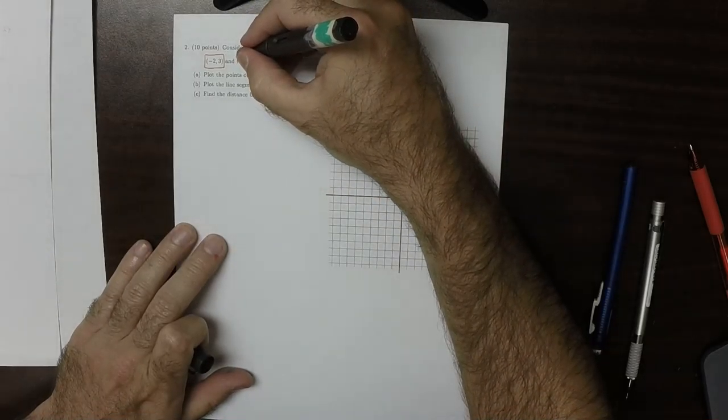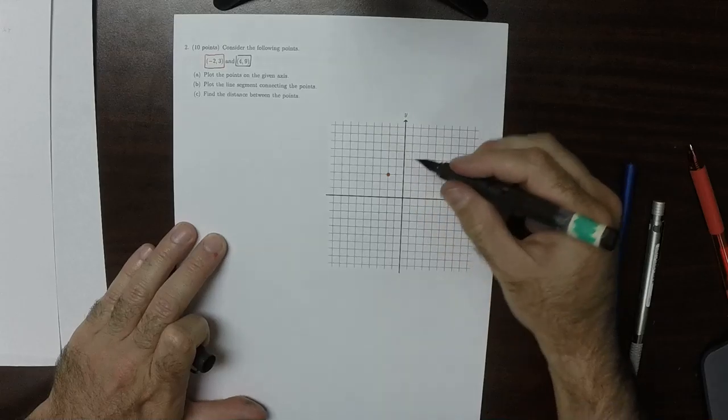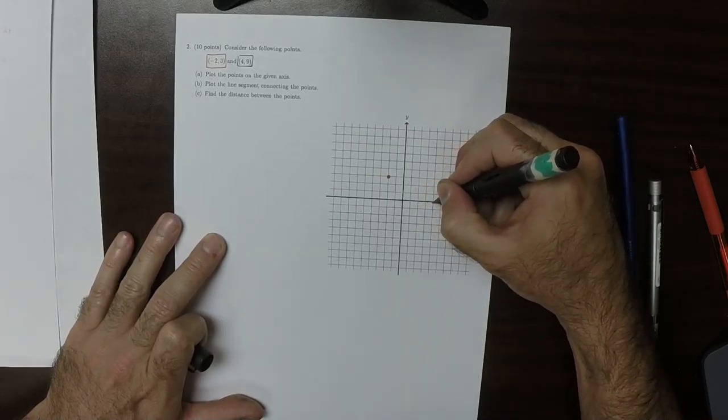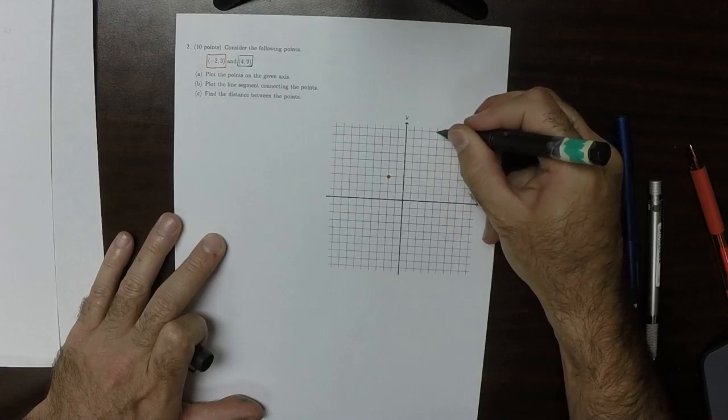I'll call this the green point. So 4, 9. OK. So 1, 2, 3, 4. 1, 2, 3, 4, 5, 6, 7, 8, 9.